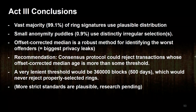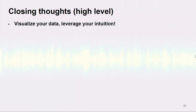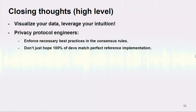Closing thoughts: first, visualize your data and leverage your intuition. It's really hard to stare at just a text dump, but if you can import it into Python and make a couple quick plots, you'll have way more power in interpreting what you're looking at. My advice to privacy protocol engineers: enforce necessary best practices in the consensus rules. Don't just hope that all devs match the perfect reference implementation — it's a complicated thing, easy to get wrong, and it would be helpful if the protocol rejected incorrect things to help wallet makers debug and troubleshoot. Privacy coin software developers should try to match the reference wallet — a simplification like just grabbing random decoys can leak a surprising amount of information in ways you often don't notice until you visualize it.